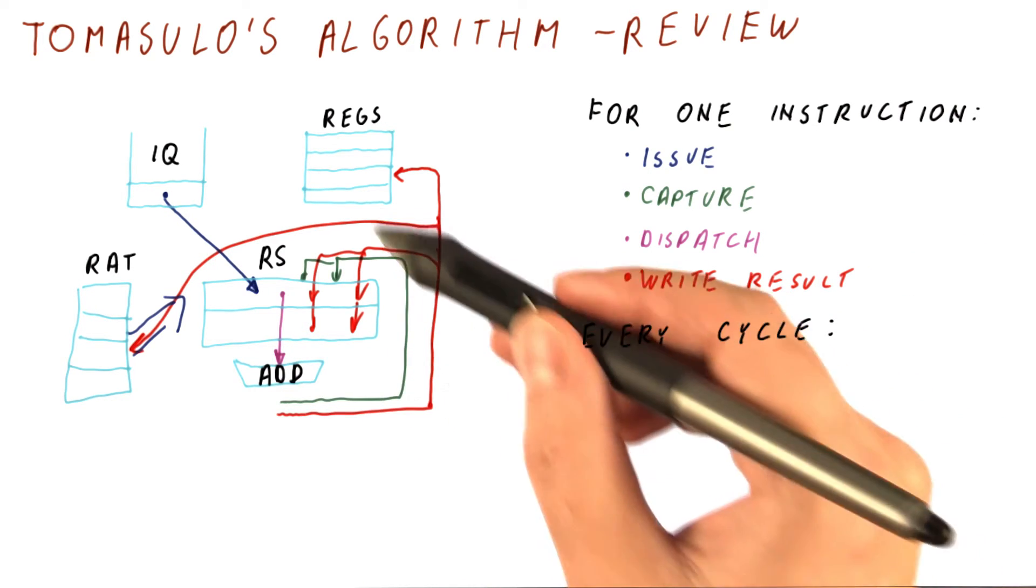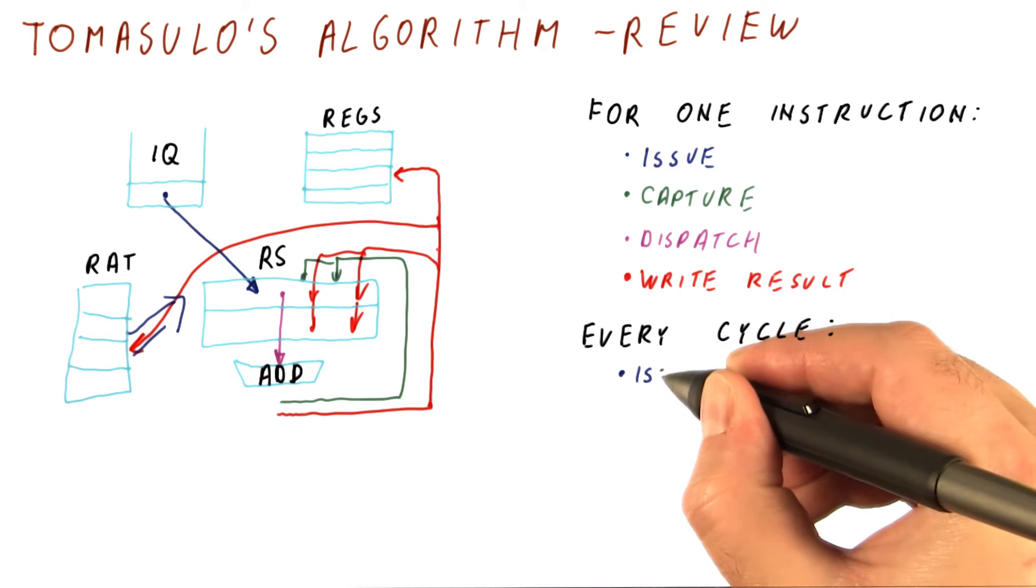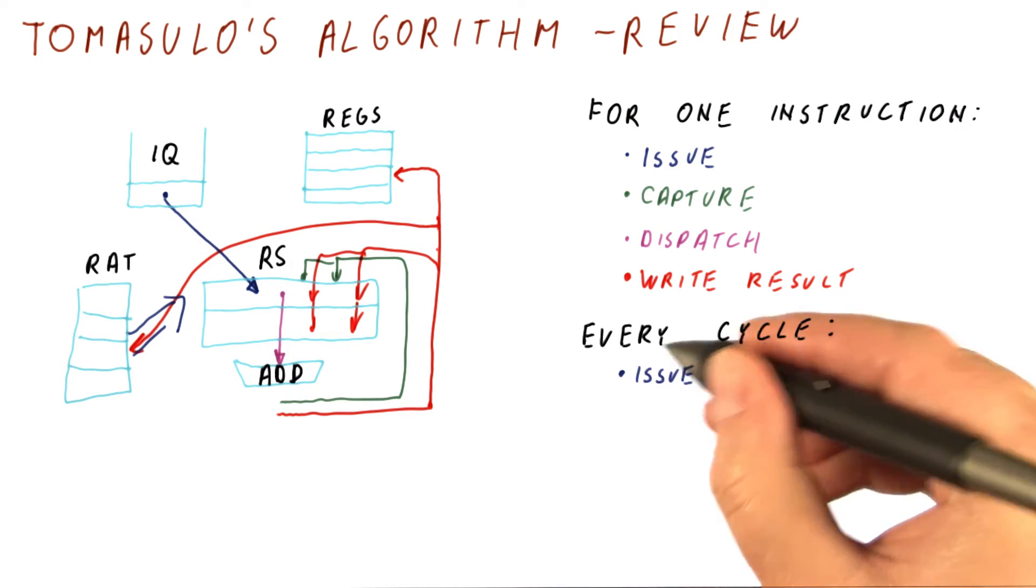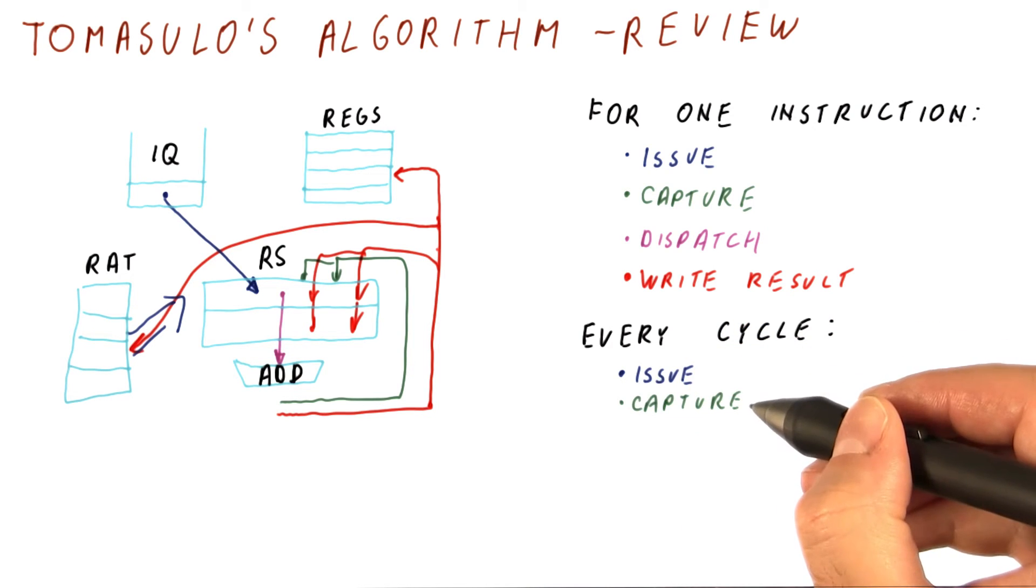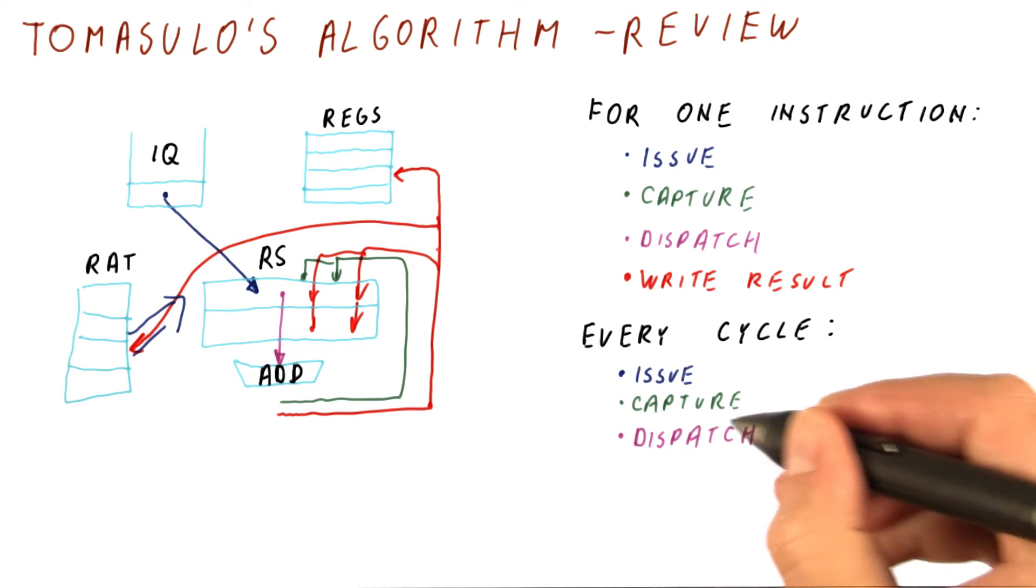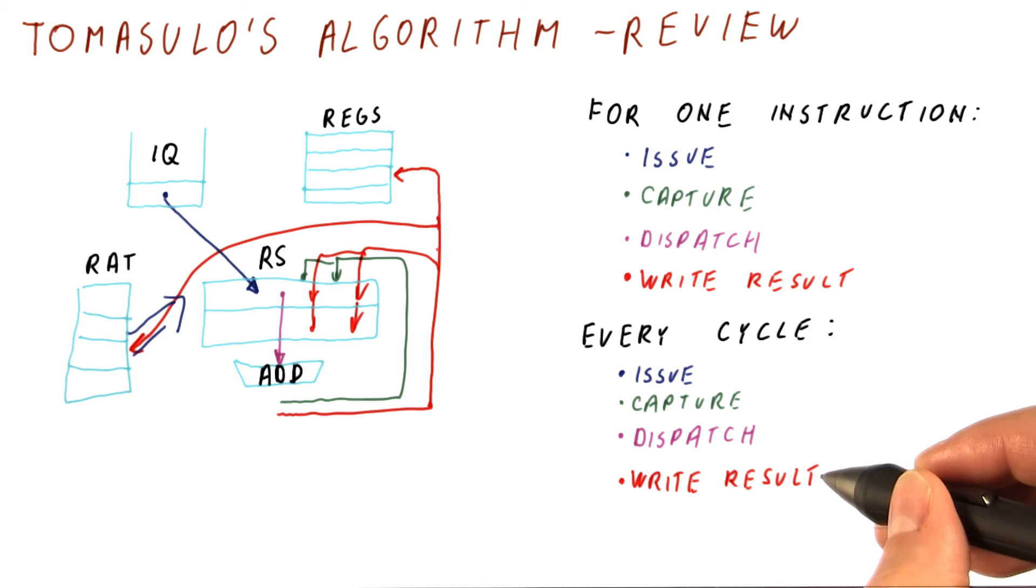So during a particular cycle, some instruction might be issued, some instructions are trying to capture their operands, some instructions are trying to be dispatched, and finally, some instruction is writing its result.